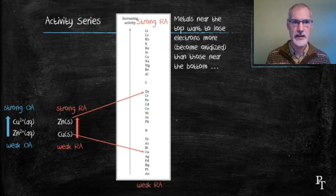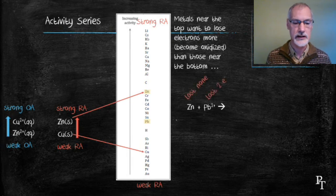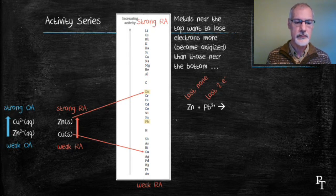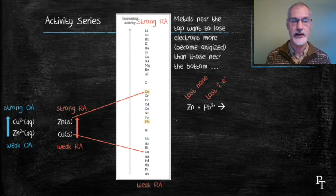Let's use this table to look at reactivity. Suppose we have a piece of zinc sitting in a lead solution. Zinc, with no charge, has lost no electrons. Lead, with a plus two charge, has lost two electrons. According to the table, zinc wants to lose electrons more than lead does. So this is not a stable situation — zinc would prefer to lose electrons, so this combination will react such that zinc loses the electrons and lead doesn't.